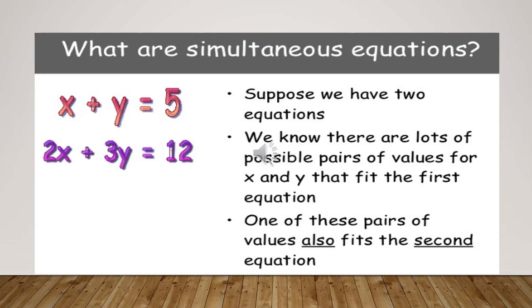Suppose we have two equations: x plus y equals to 5 and 2x plus 3y is equal to 12. We know that there are a lot of possible pairs of values for x and y that fit the first equation. One of these pairs of values also fits in the second equation. It means that if I am calculating the value of x, so it can be put into equation 1 or equation 2. Or if I am putting the value of y, so I can put it in equation 1 or equation 2. It means both of the values can be kept in any of the equation.